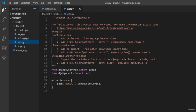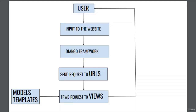Now let us see what URLs does. Before that, let us know more about Django. Django follows the MVT architecture, which stands for Models, Views, and Templates. Whenever a user tries to fetch data or gives some input to the website, Django sends the request to the URLs. URLs maps the request to views and searches for the function in views. Views then uses models and templates to get data and show the output to the user.